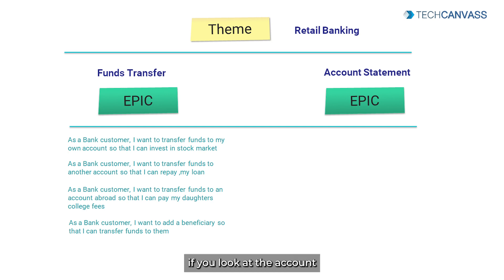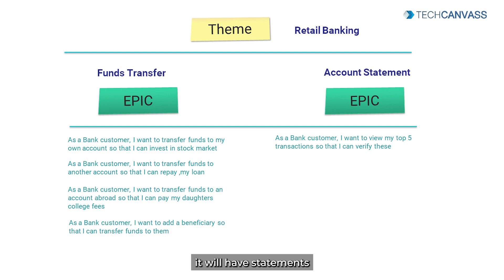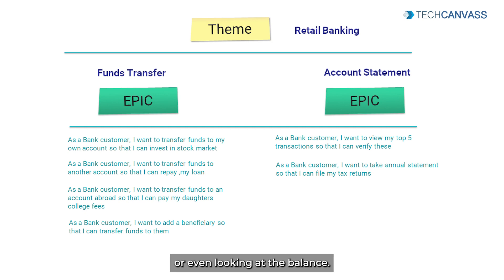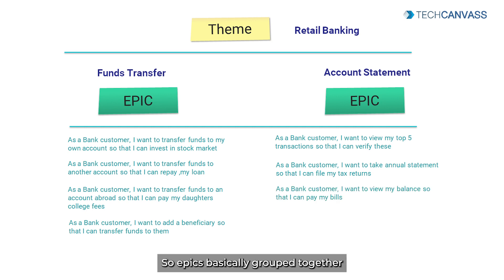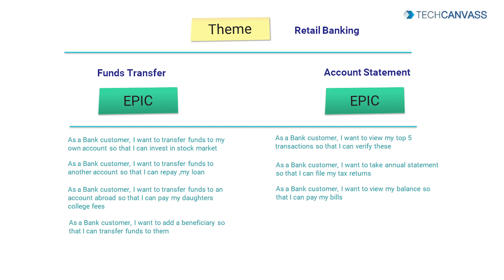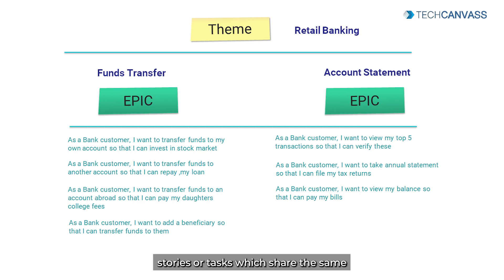Similarly, the account statement epic will have stories related to the latest five transactions, annual statement, or even looking at the balance. So epics basically group together stories or tasks which share the same common objective.